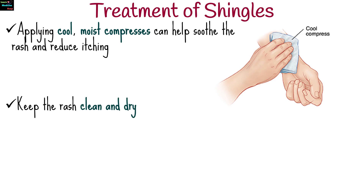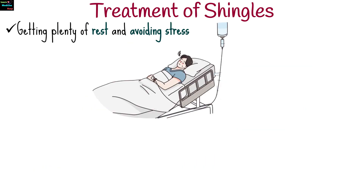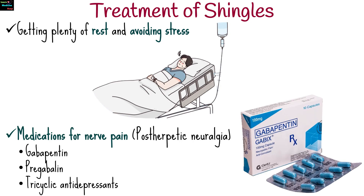It's important to keep the rash clean and dry to prevent infection. Avoid scratching or picking at the rash, as this can lead to further irritation and increase the risk of complications. Getting plenty of rest and avoiding stress can help support the immune system and promote healing. In some cases, shingles can cause persistent nerve pain even after the rash has healed, a condition known as postherpetic neuralgia. Medications such as gabapentin, pregabalin, or tricyclic antidepressants may be prescribed to manage this type of pain.